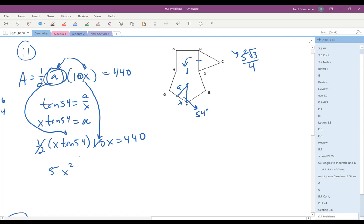Now I see that 1/2 times 10 is 5. I've got an X squared and a tan of 54. The X squared came because I had an X here and an X here. X times X is X squared.